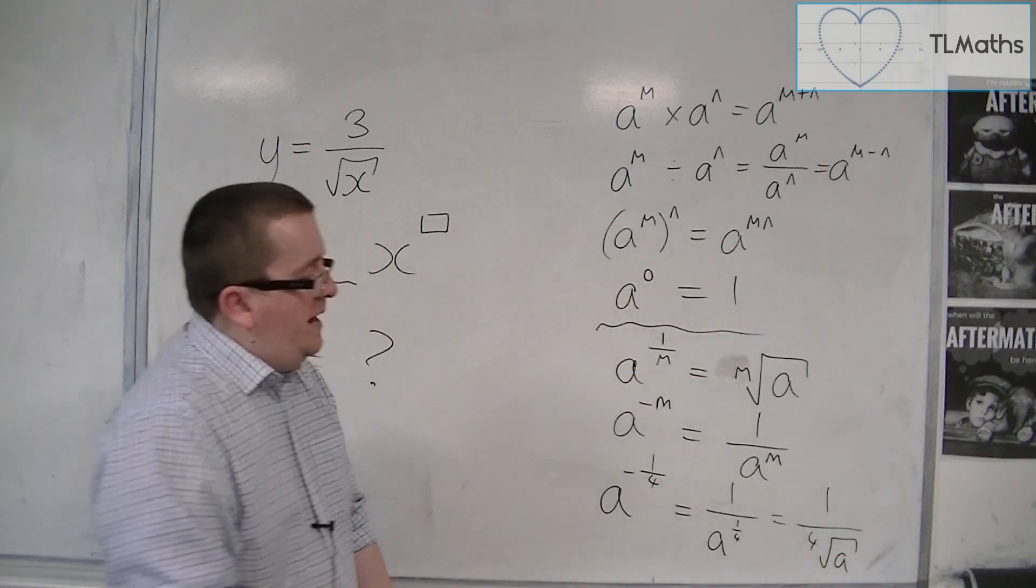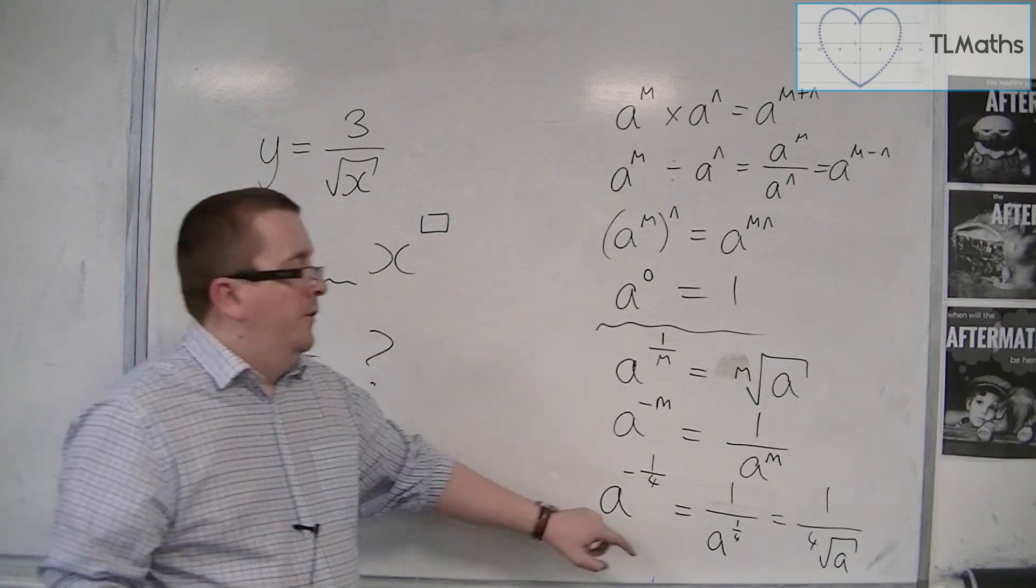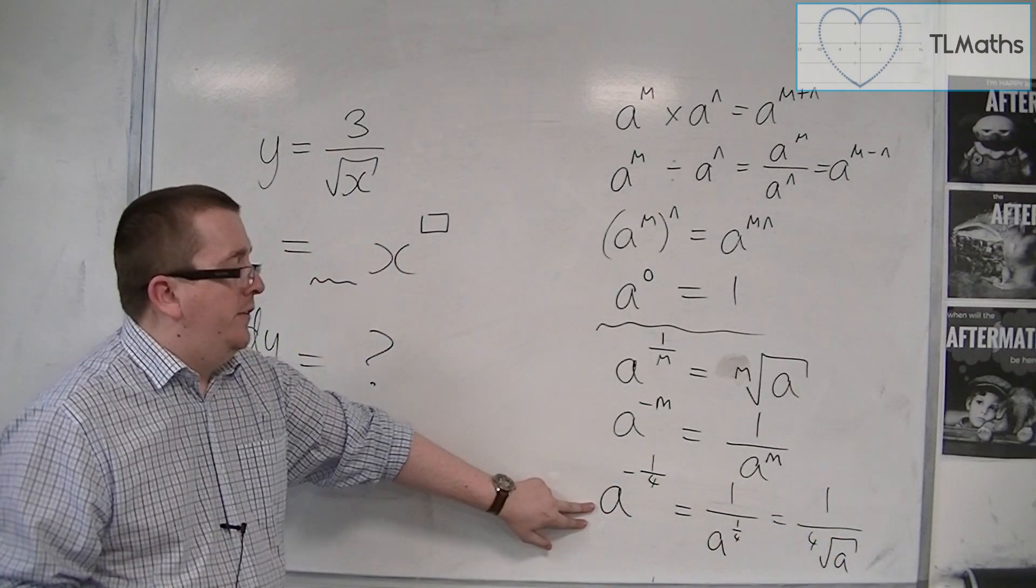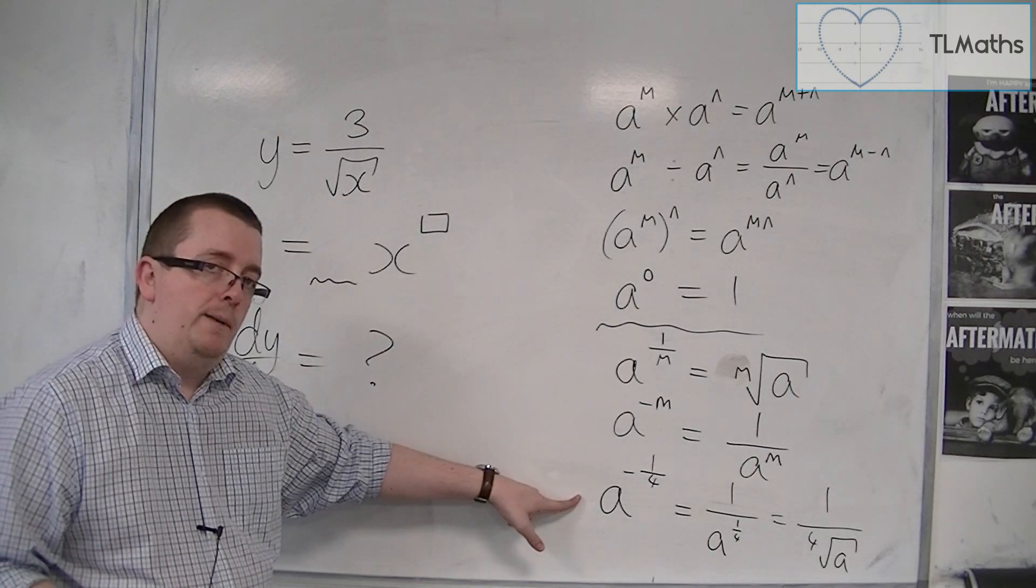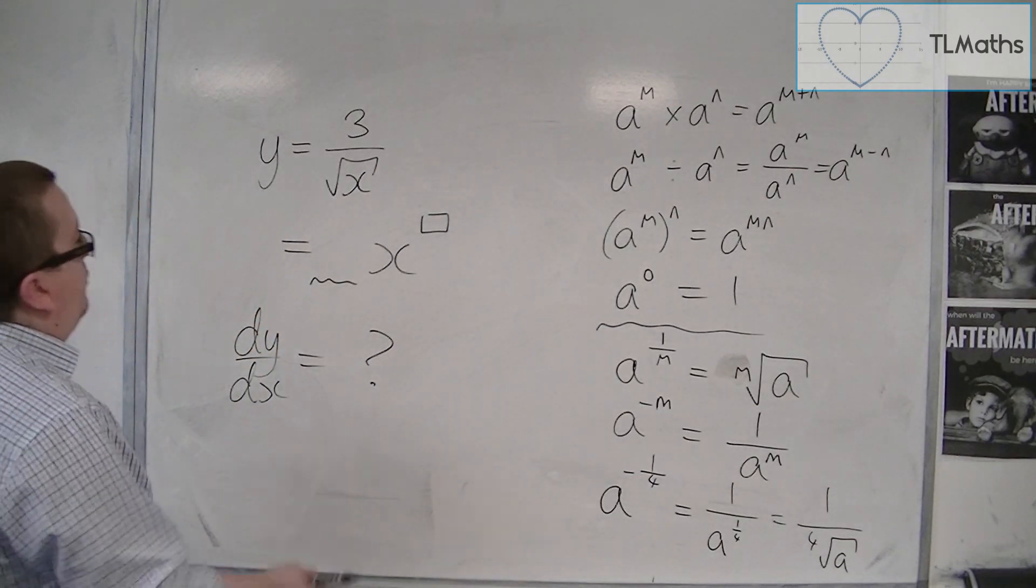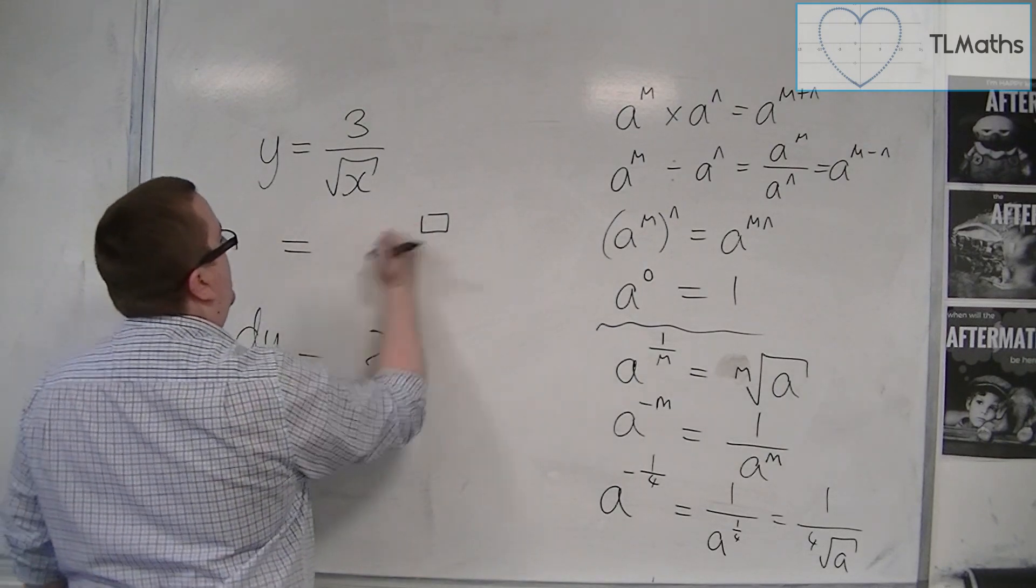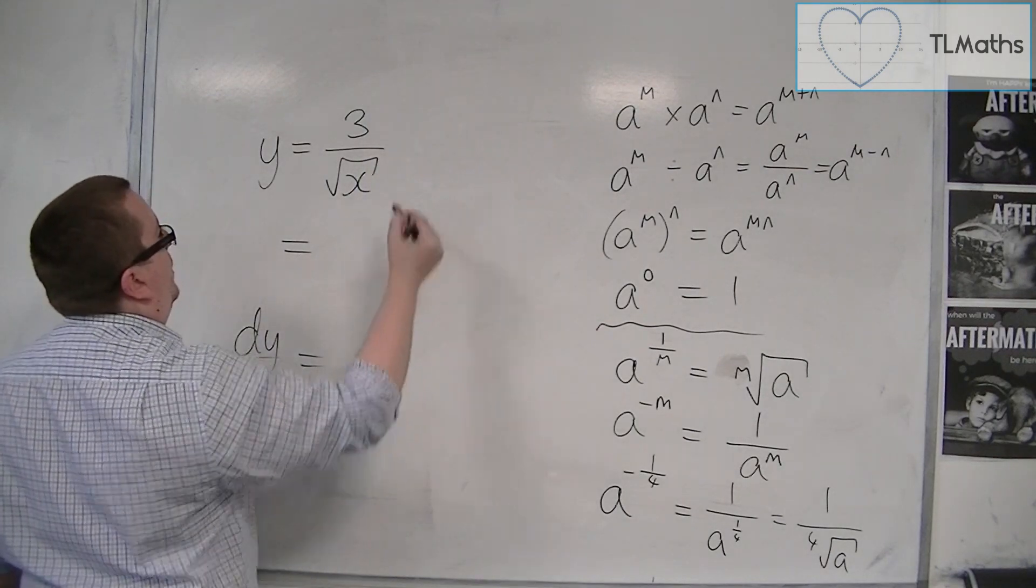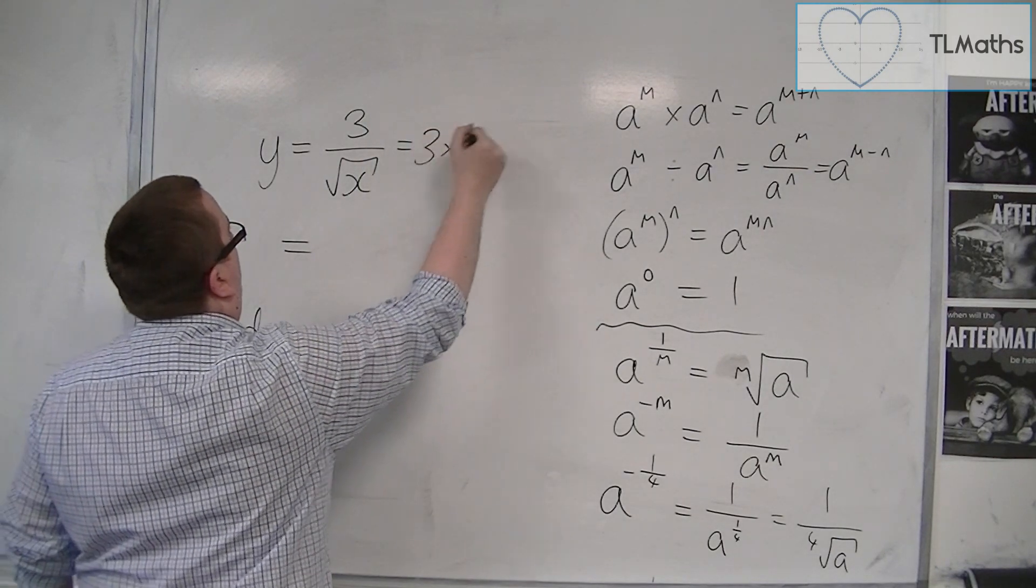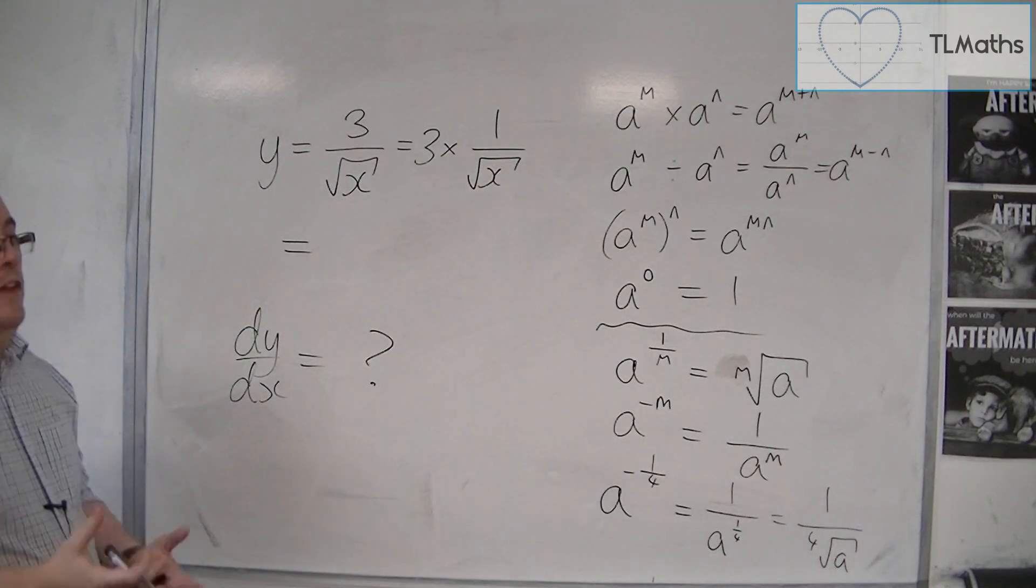So we need to be able to go from there to there. We need to reverse this process so that we can then differentiate when we're in this format. So if we're looking at 3 over root x, then what is that? Well, that's 3 lots of 1 over root x.